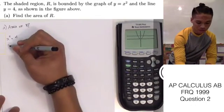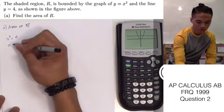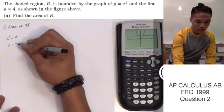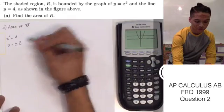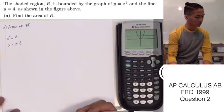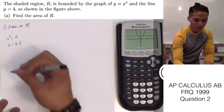This one's simple, and we just take the square root of both sides. X is positive and negative 2. Now we can go ahead and set up our integrand.